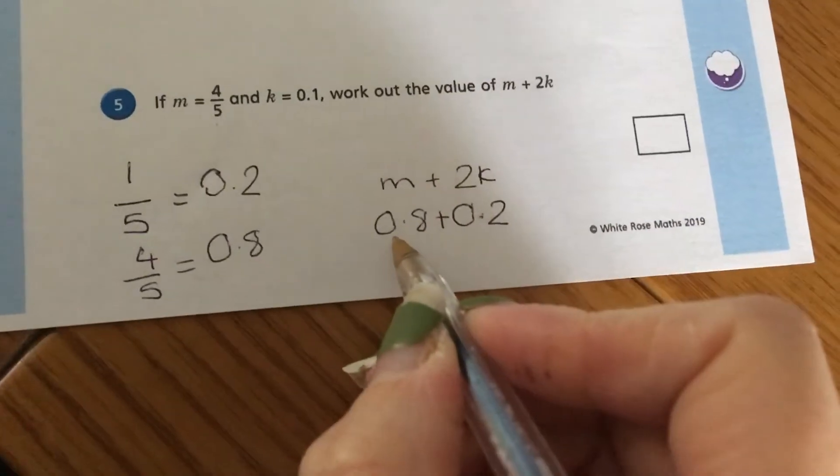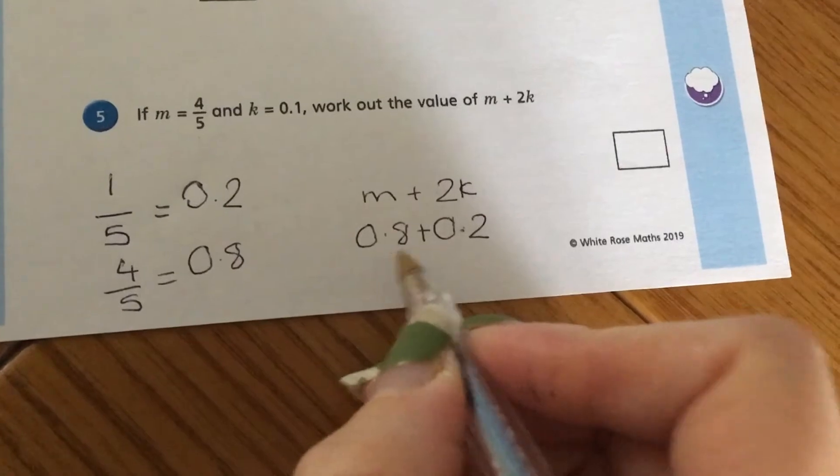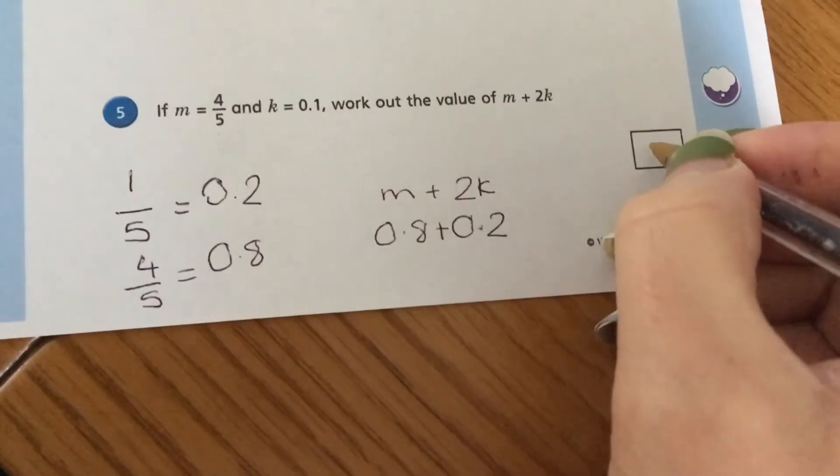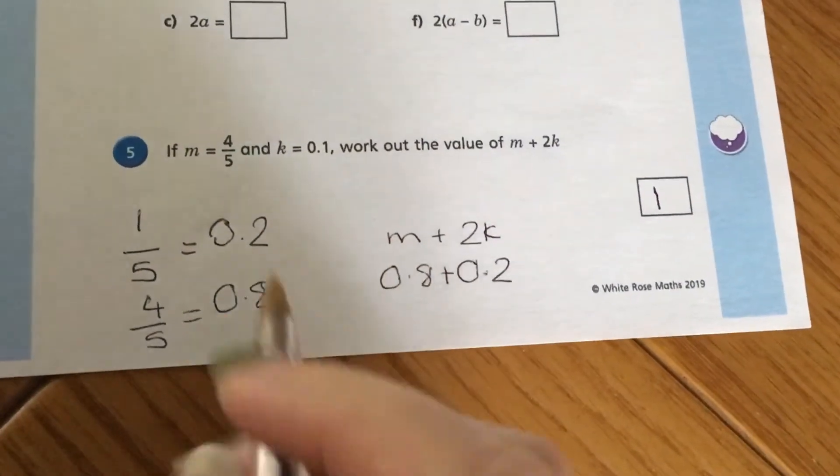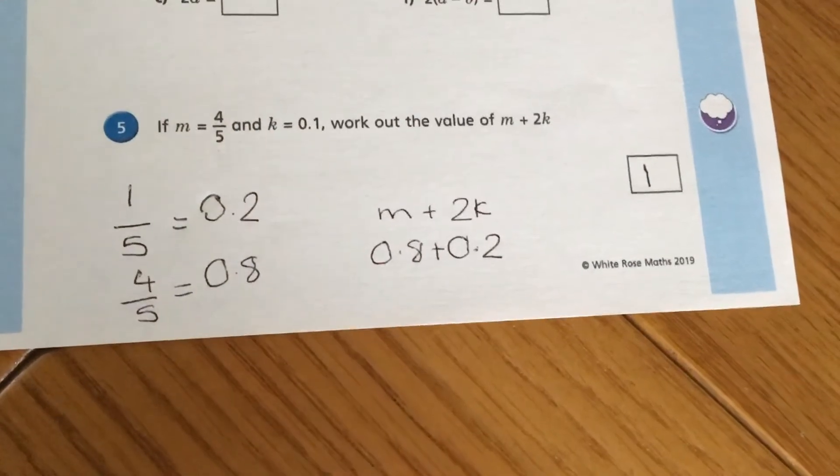Hopefully we can see, if we're thinking it was money, if we're finding it tricky, that 0.8, 80p, add 0.2, 20p is the same as one pound or one whole one. So the thing there is making sure we convert our four-fifths into a decimal.